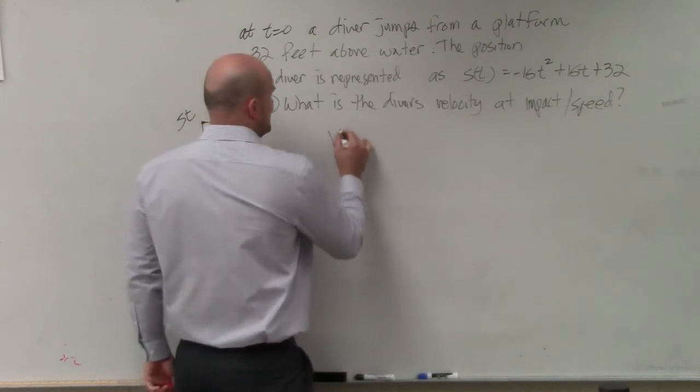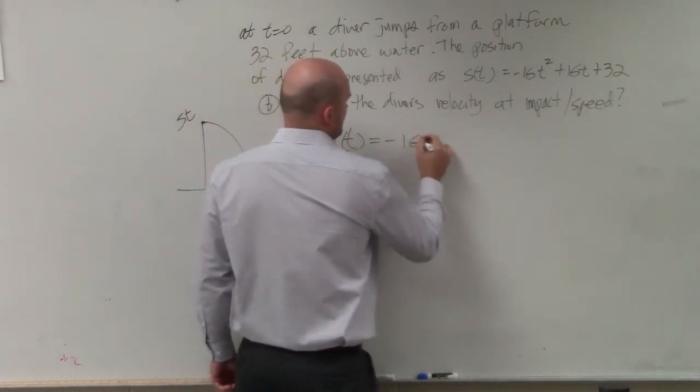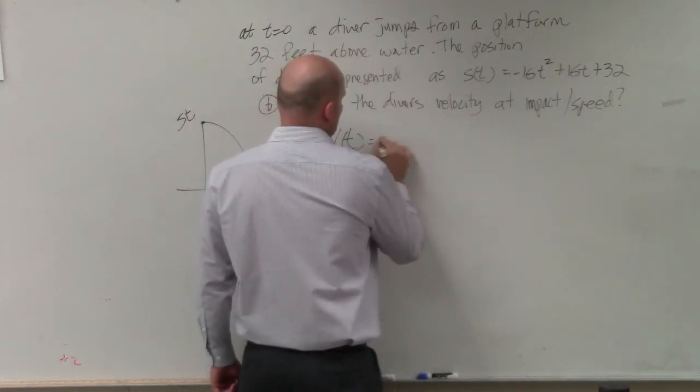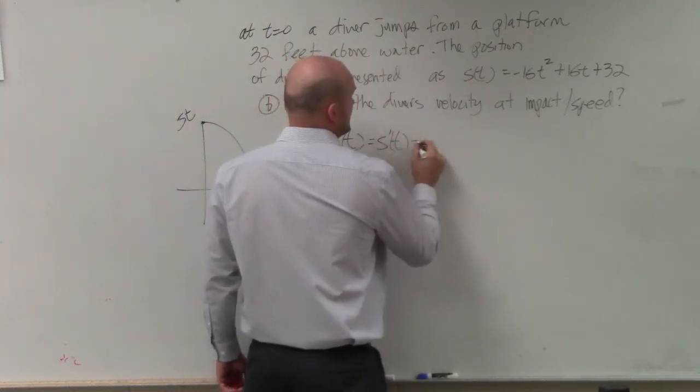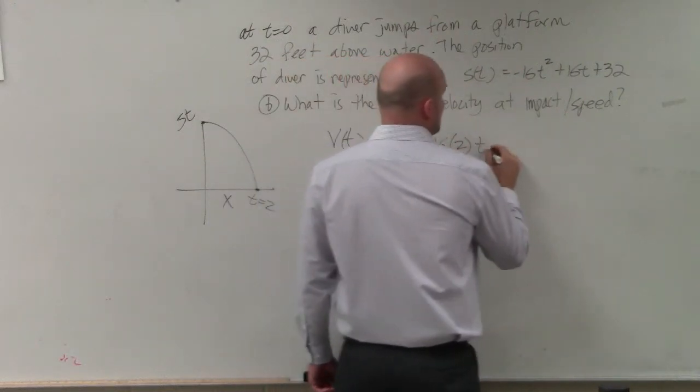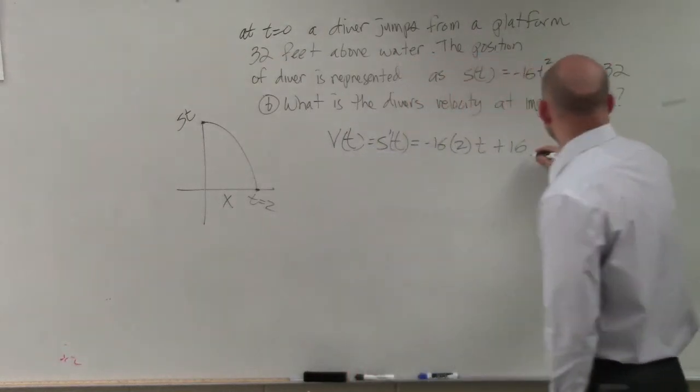So to find v of t, that's basically taking the derivative, v of t equals s prime of t. So that's going to be negative 16 times 2 times t plus 16. And then that goes to 0.